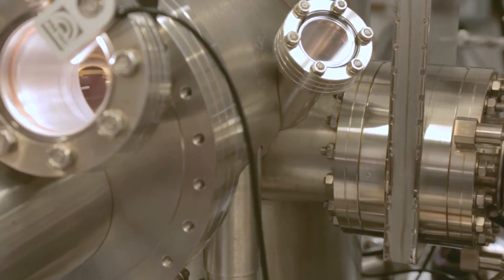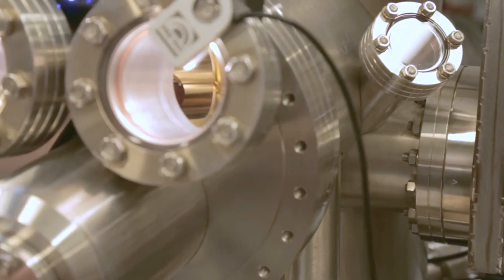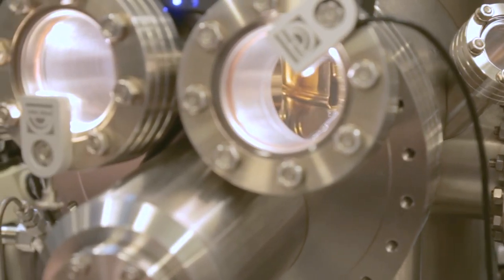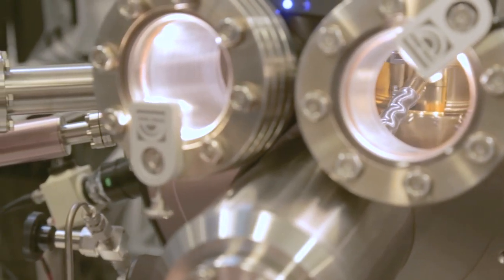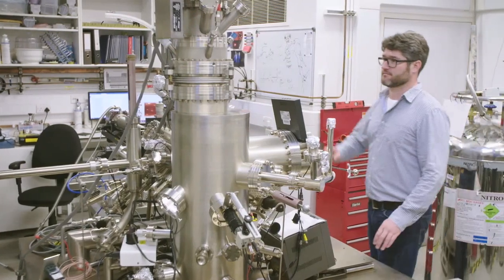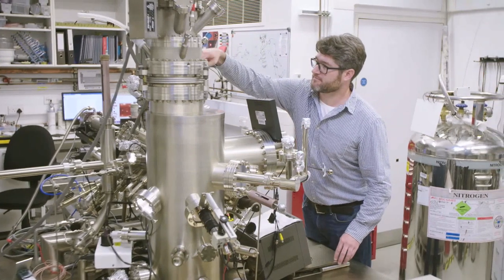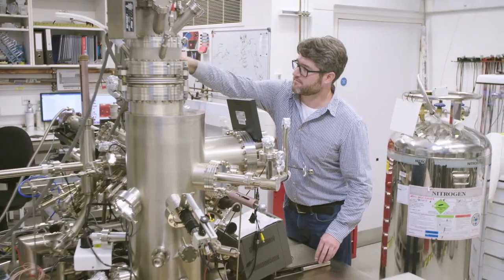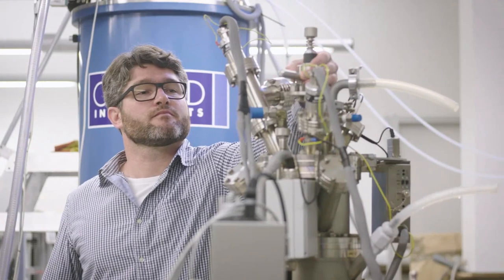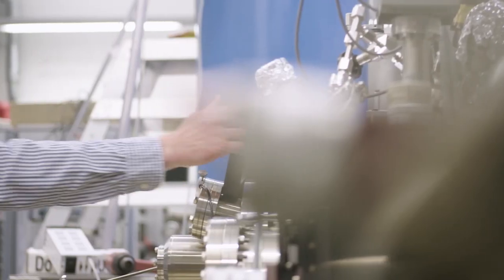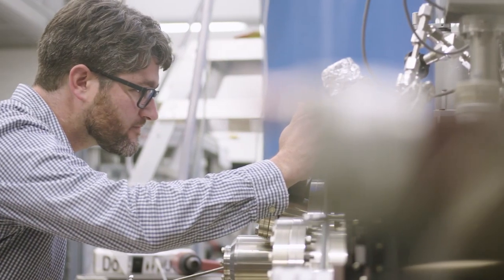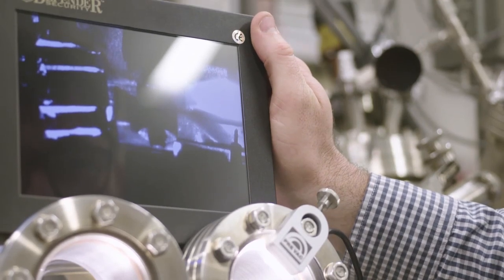We use scanning tunneling microscopy not only as a technique to image surfaces at the atomic scale, but also to manipulate the individual atoms and molecules on the surfaces to form small nanostructures. And then we can also use the microscope to measure the properties of the individual nanostructures. The reason that we're creating these nanostructures is because we're trying to investigate ways in which we can build nanoscale devices where really the individual components are constructed out of individual atoms.